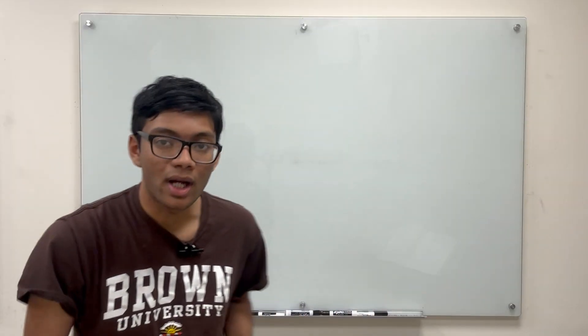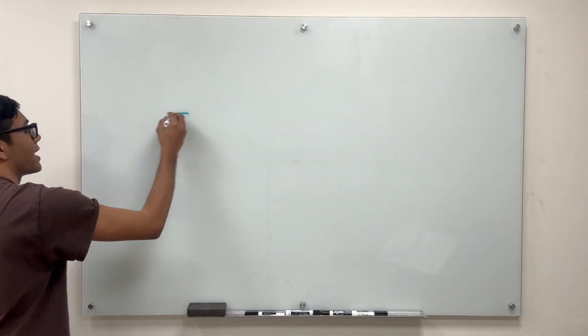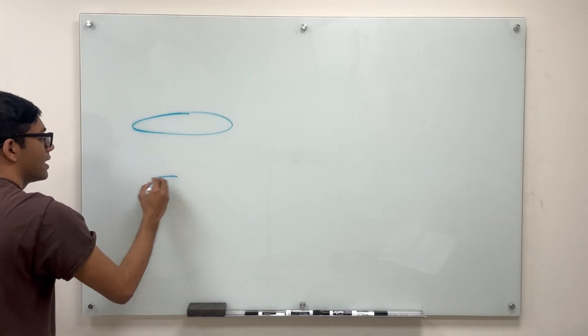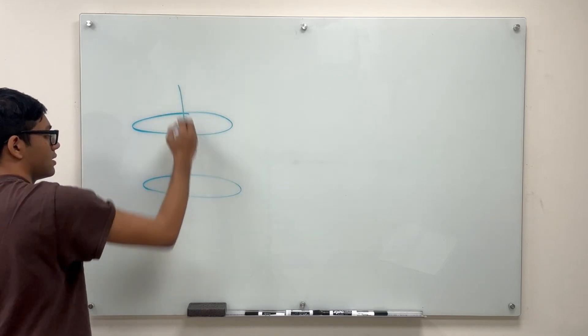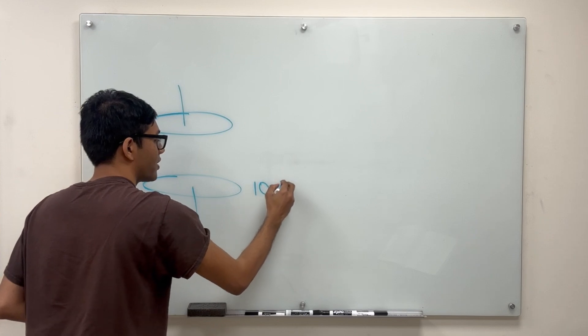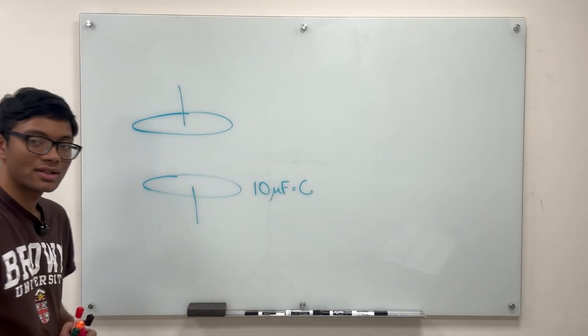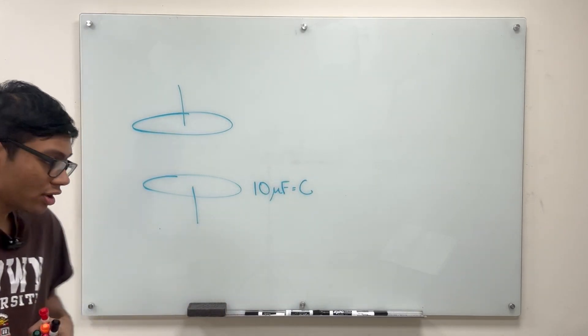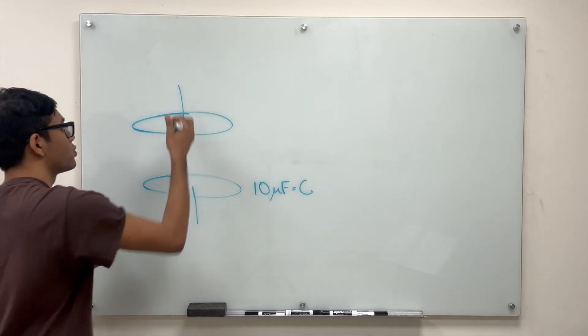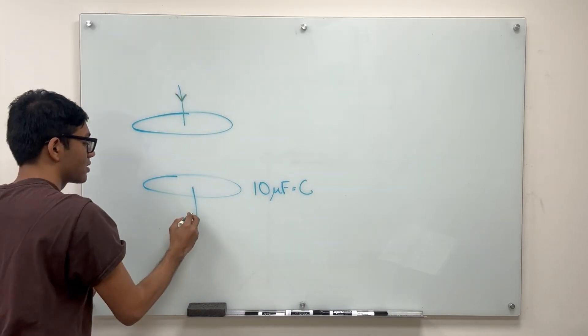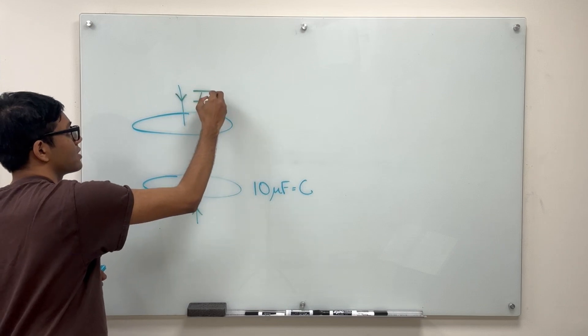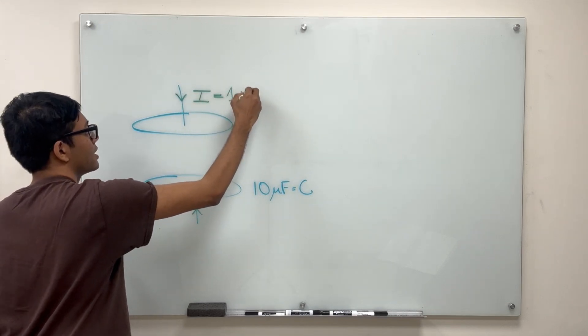All right so here's the problem. We have a parallel plate capacitor and this capacitor is 10 microfarads. That's the capacitance of the capacitor and it's being charged by a current. The current is 1 milliamp. So here's the current that's charging my capacitor and it's 1 milliamp.